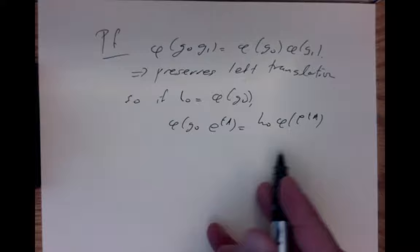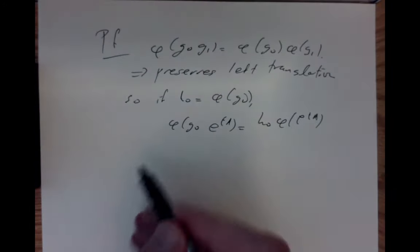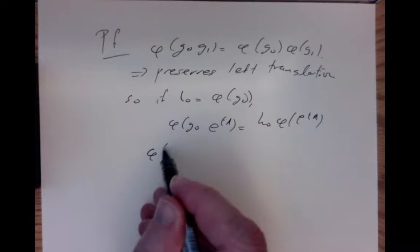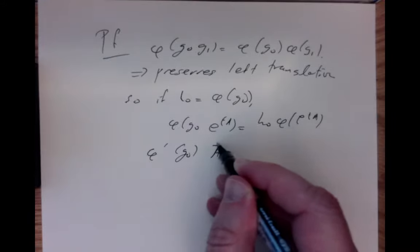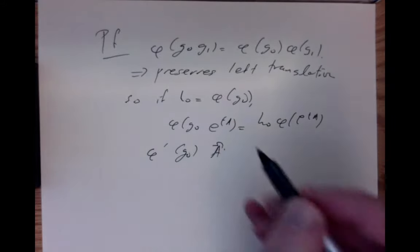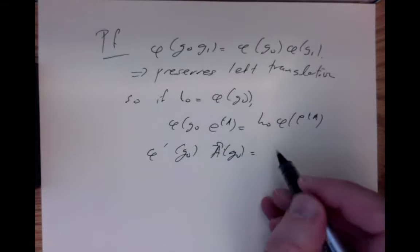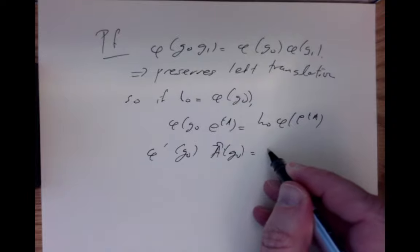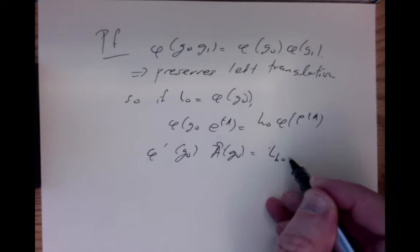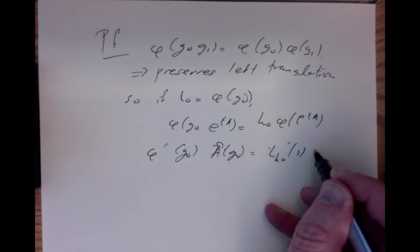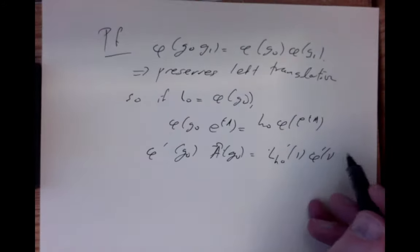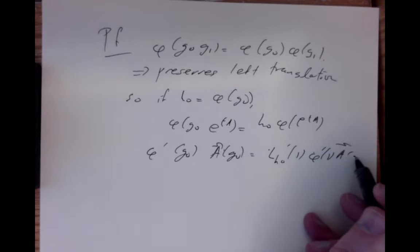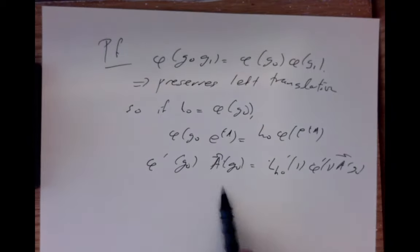If we differentiate that — this is a left translation here, it's the left translation here — we simply get that the derivative of phi applied to the left-invariant vector field, whose flow is this expression, should correspond to the left translation by H_0 composed with phi-prime at the identity times the vector at G_0. So it matches these things up.